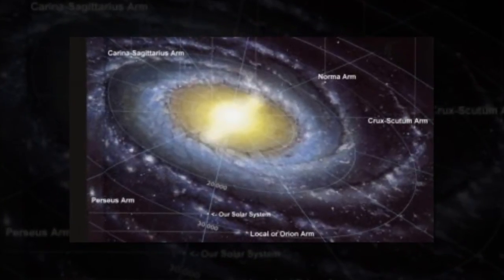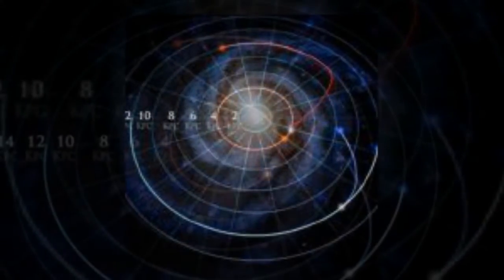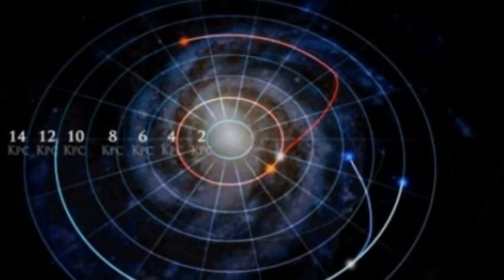To build a new map of the Milky Way, scientists used the SDSS Apache Point Observatory Galactic Evolution Explorer spectrograph to observe 100,000 stars during a four-year period.